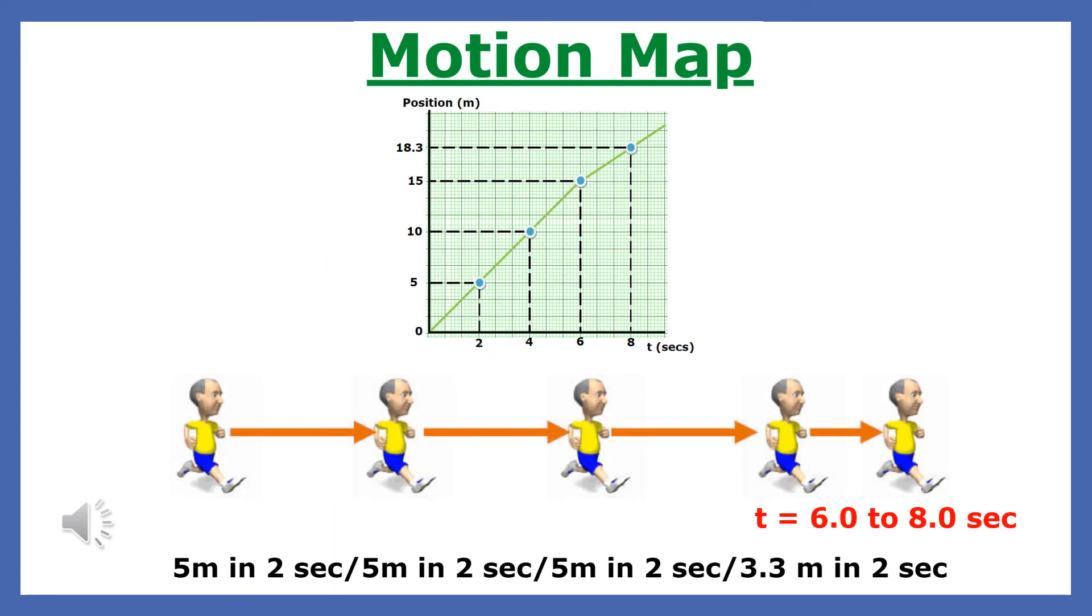This was a displacement versus time data for a runner. This is what you would see when you observed his motion. Notice that after 6 seconds, the velocity of the runner decreases.